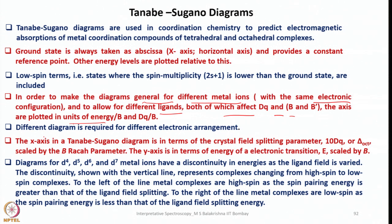The difference between Tanabe-Sugano diagram and Orgel diagram: a different diagram is required for different electronic arrangement. That means every electronic arrangement you need a separate Tanabe-Sugano diagram - d1, d2, d9, all d1 to d9 except d5 need separate diagrams, but it includes all ligands having different ligand field strength. The axis in Tanabe-Sugano diagram is in terms of crystal field splitting parameter 10Dq or delta octahedral scaled by the B Racah parameter, the y-axis in terms of energy E scaled by B.